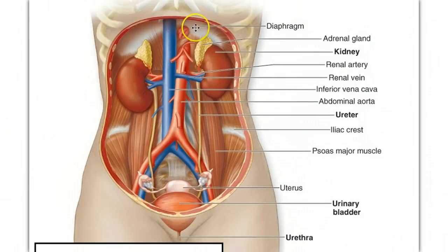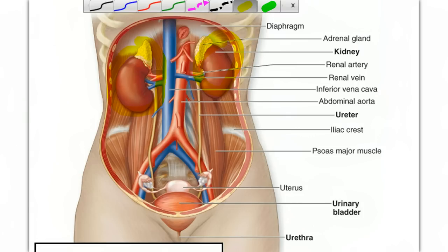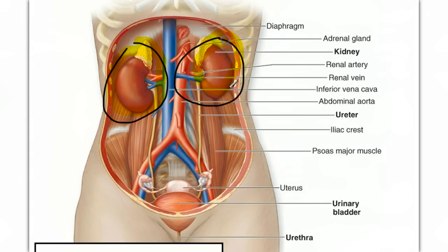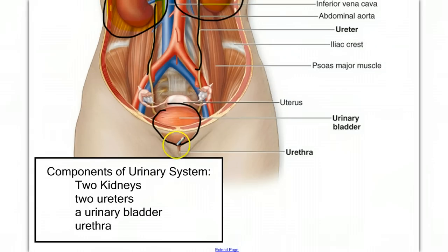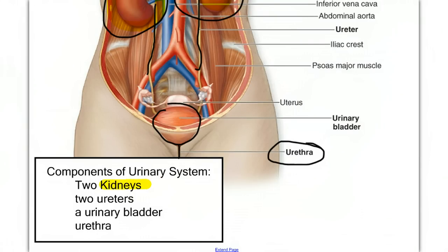Our urinary system consists of two kidneys, two ureters which carry the urine that's produced down to the bladder, and then to carry the urine from the bladder out of the body, there's a tube called the urethra. That's the overall system. Within this system, we're going to spend our time focused on the kidneys and the function of the parts inside the kidneys.